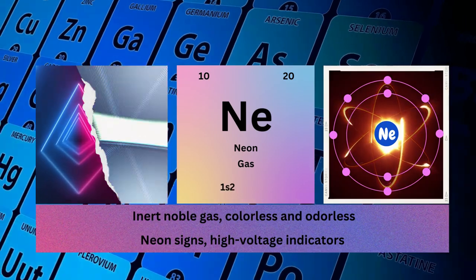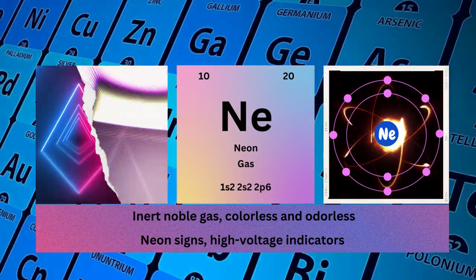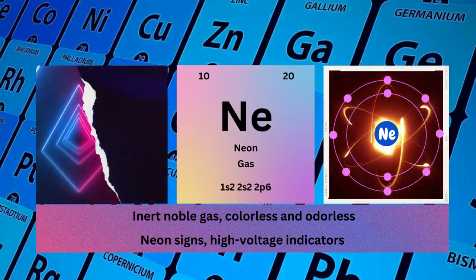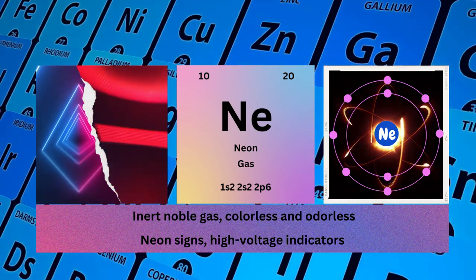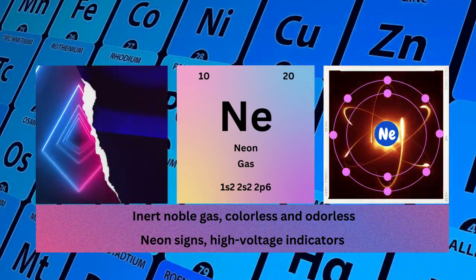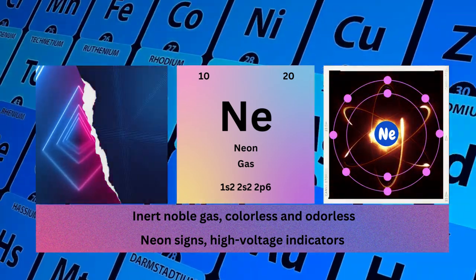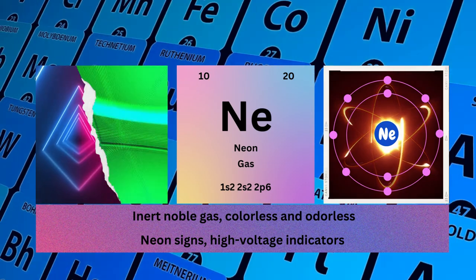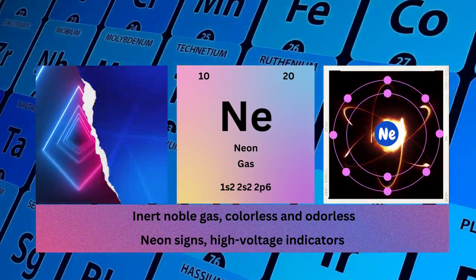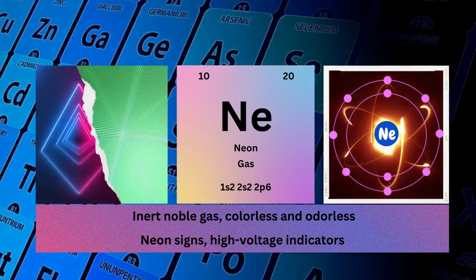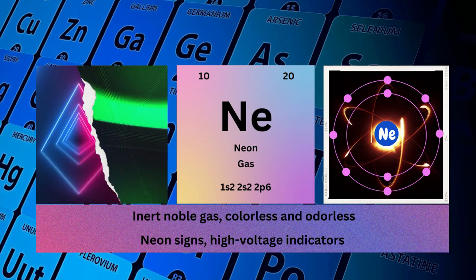Neon, atomic number 10, mass number 20, symbol Ne, state gas, electronic configuration 1s²2s²2p⁶. Physical properties: inert noble gas, colorless and odorless. Neon uses: neon signs and high voltage indicators.